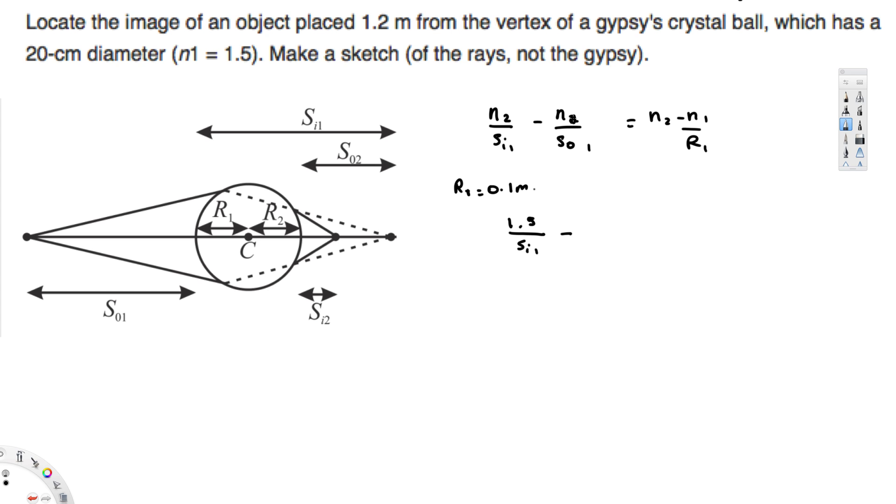This should be n₁ right here, this should be n₁. n₁ is the refractive index of the air, that is 1, divided by sₒ₁, that's going to be negative 1.2. And then n₂ again, that's going to be 1.5 minus 1 divided by the radius, that's going to be 0.1.